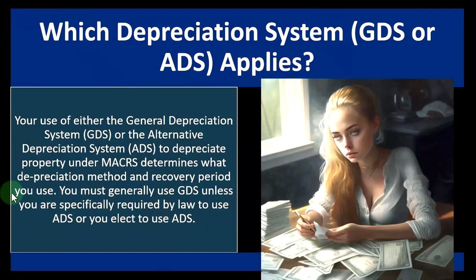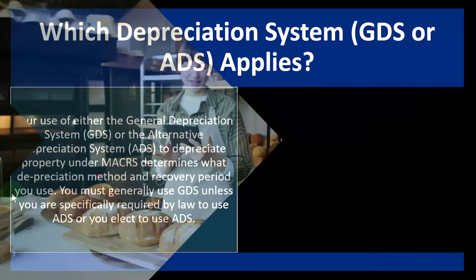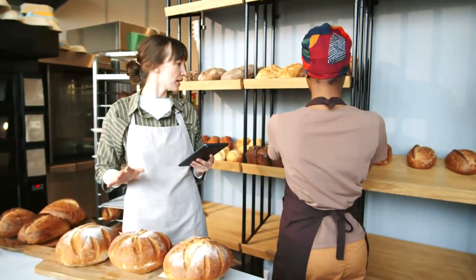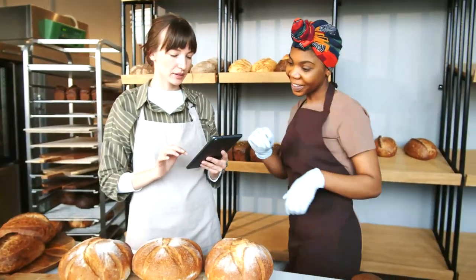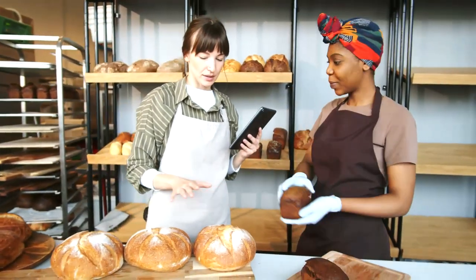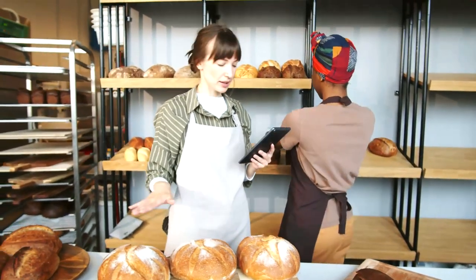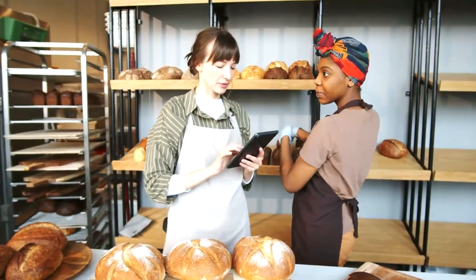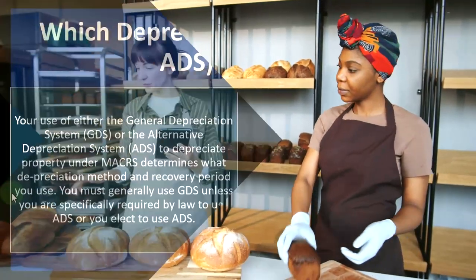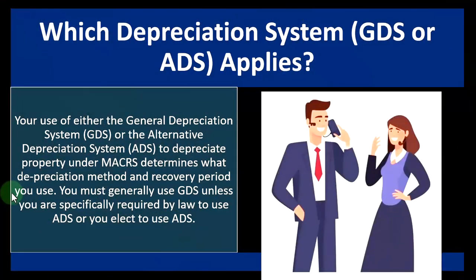The incentives are a little different between book and tax, which means we might have different depreciation methods from a book standpoint versus a tax standpoint. Small businesses need to decide whether to align their depreciation to the tax code or use different depreciation methods. Tax software often has the capacity to calculate both book and tax depreciation, so that's something to keep in mind when talking to your tax professional or integrating the bookkeeping side of things.